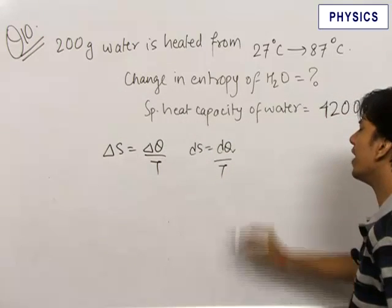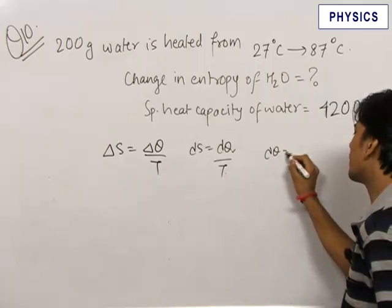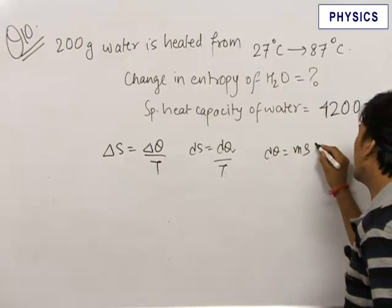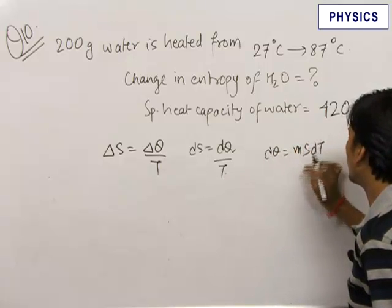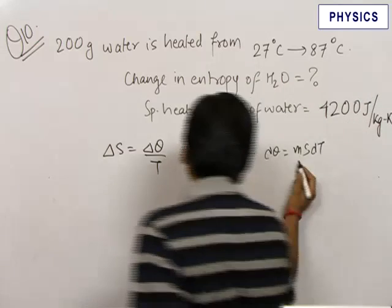The small amount of heat given at temperature T can be written as m S dT. This is mass of water into specific heat of water into dT. On substituting this over here, we get dS is equal to mS.